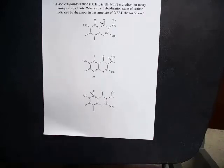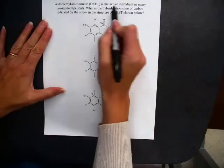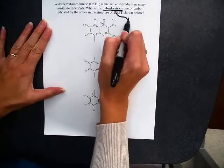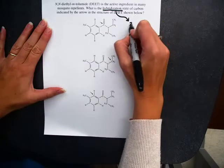All right, so I've got a molecule here. It tells me a little bit about it. It's DEET. But what it's asking me for is hybridization of the various carbons. And you can see each one points to a different carbon.